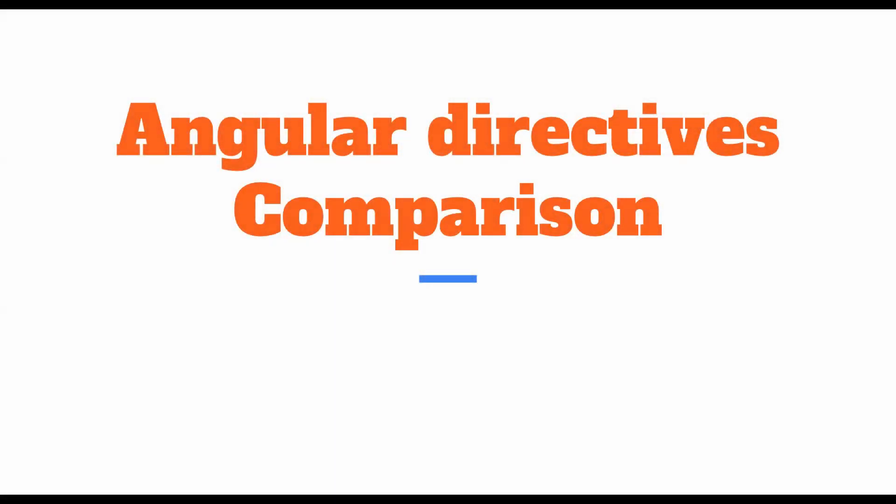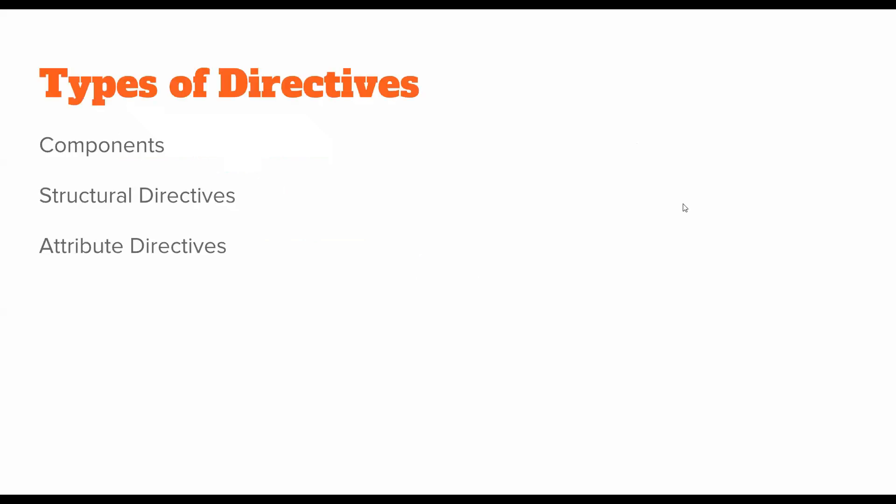In this short video I will talk about some of the differences between the different kinds of directives available in Angular. The available directives in Angular at this point are components, structural directives, and attribute directives. I will talk about the differences between all of these directives and then walk you through a basic code example using the inbuilt structural and attribute directives of Angular on a component.